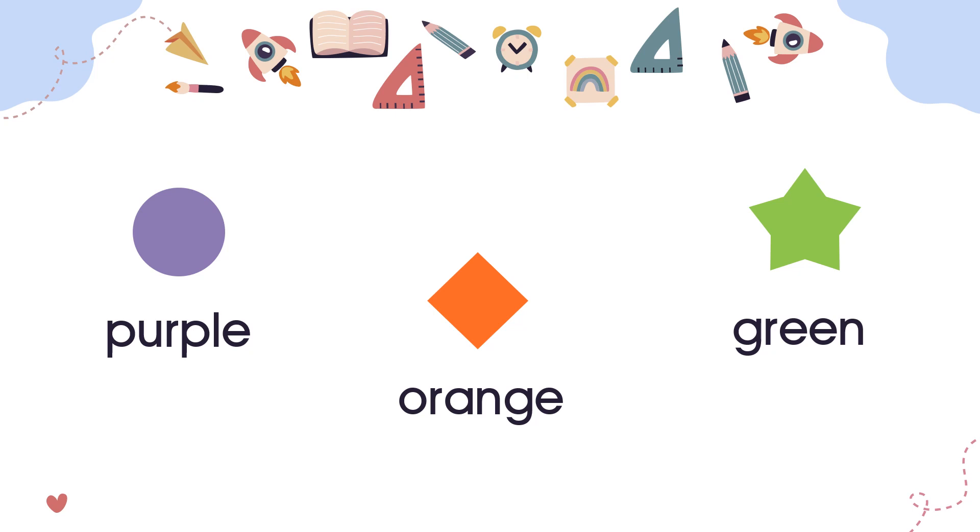Let's spell these colors. Purple: P, U, R, P, L, E. Purple. Orange: O, R, A, N, G, E. Orange. Green.